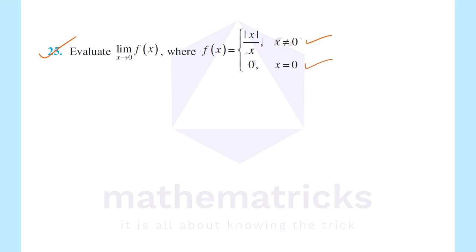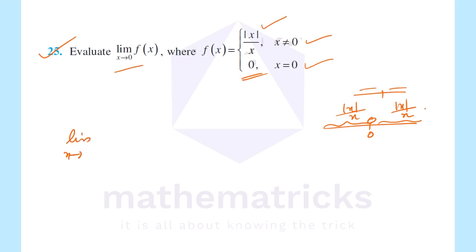The function is defined with x equal to 0 as the point of interest. The function of 0 on the left side is negative and on the right side is positive. That is why we need to consider the left-hand limit and the right-hand limit separately.